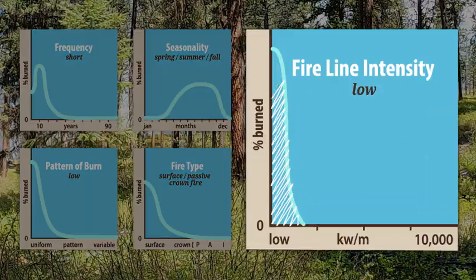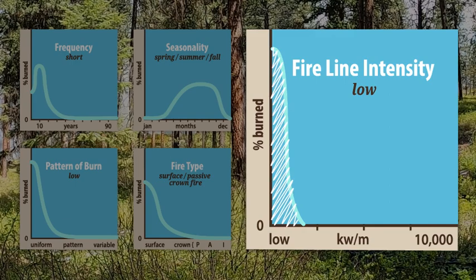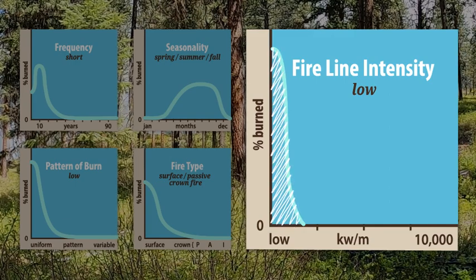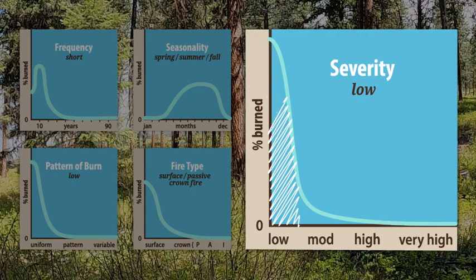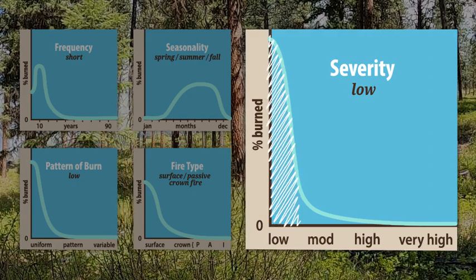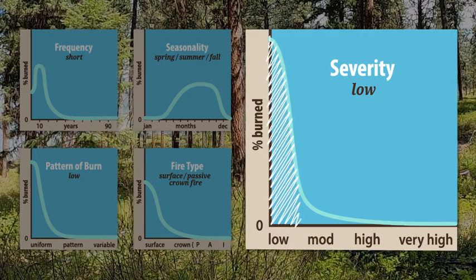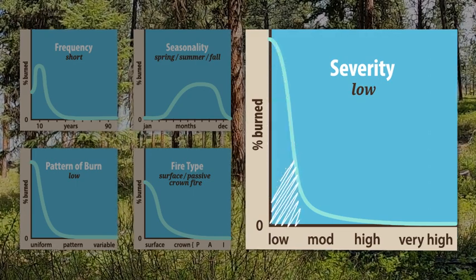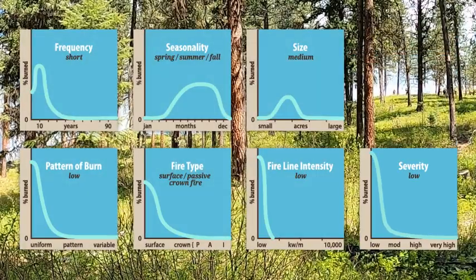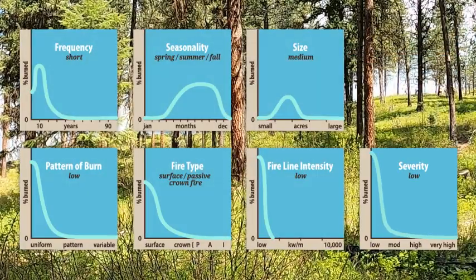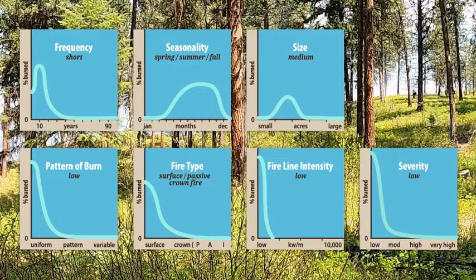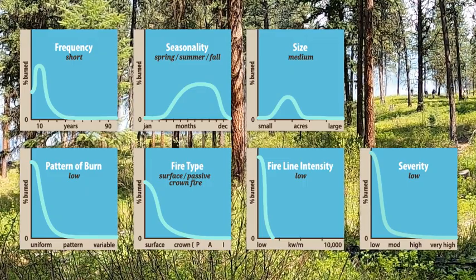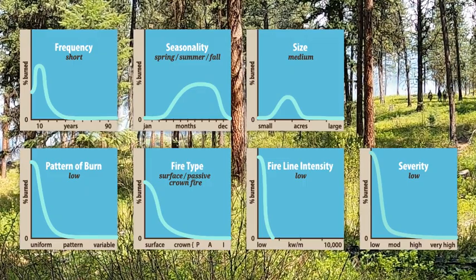Fire line intensity was low because frequent fires reduced the fuel on the site. Fire severity was also generally low because fires burned for short periods of time through fine fuels. These fire regime characteristics shaped the landscape into park-like stands of open trees with high branches and low understory, which then perpetuated the fire regime.